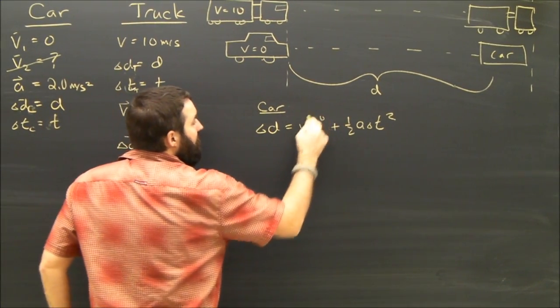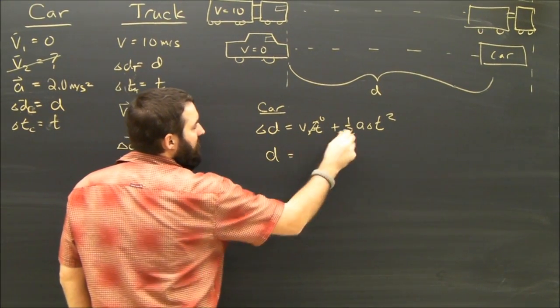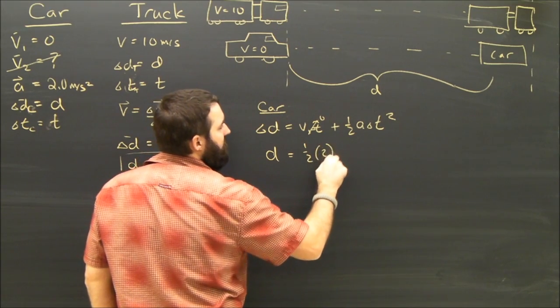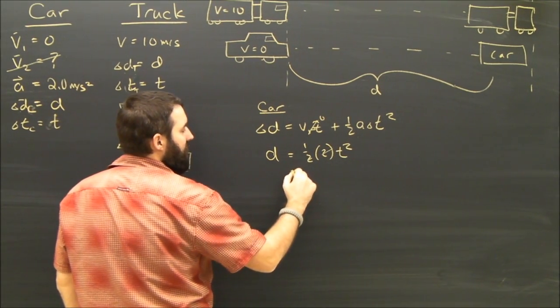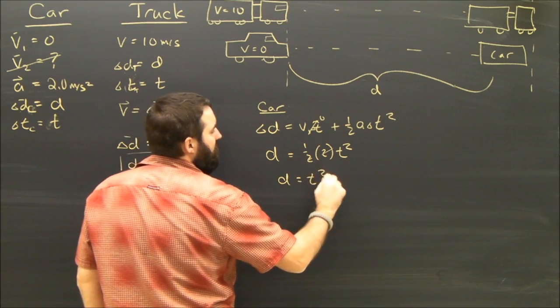Subbing in my givens, V1 is zero, so I get D equals 1 half times 2 T squared. 1 half and 2 are going to cancel, so D equals T squared.